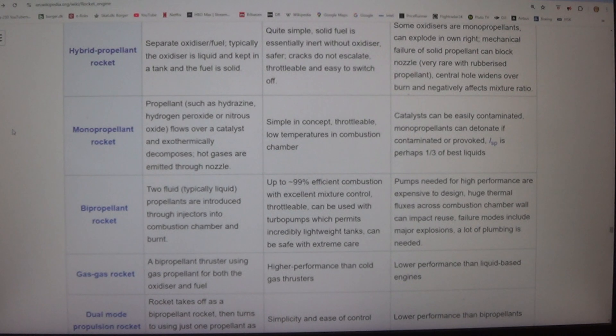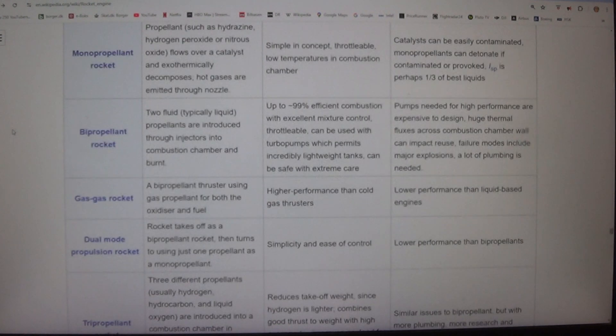Gas-gas rocket - bipropellant thruster using gas propellant for both the oxidizer and fuel. Higher performance than cold gas thrusters. Lower performance than liquid-based engines.